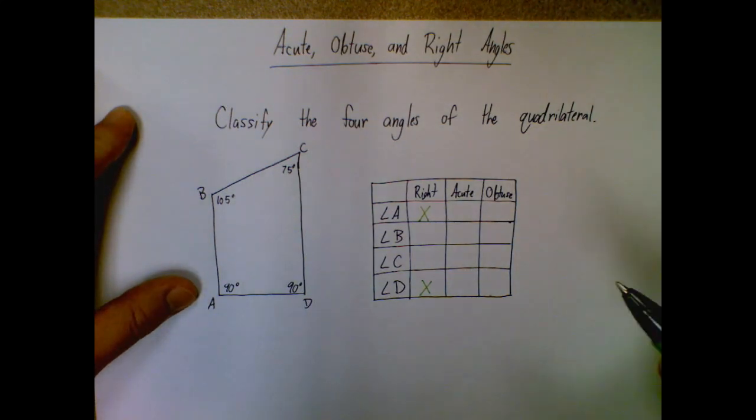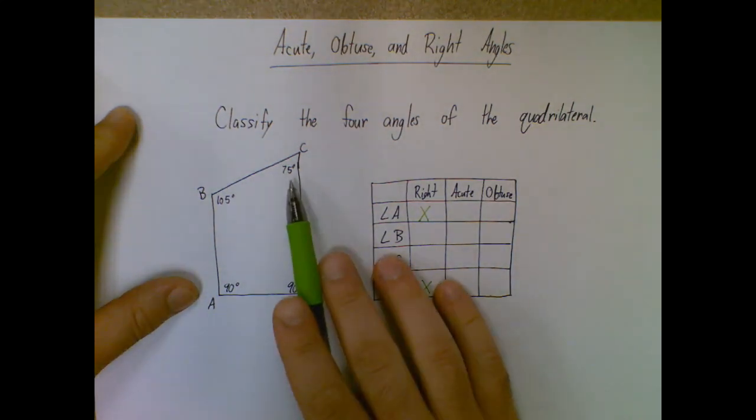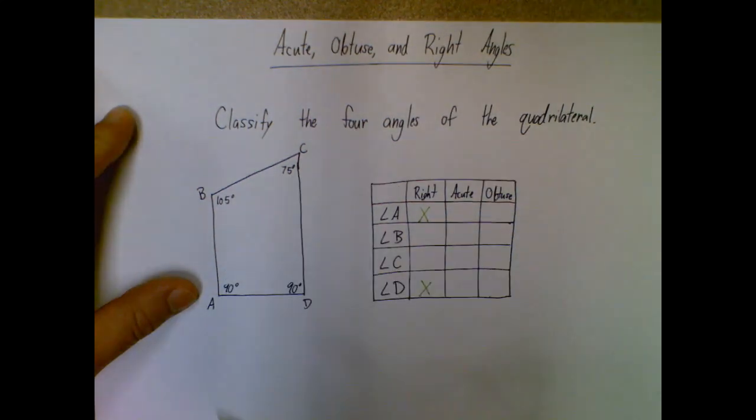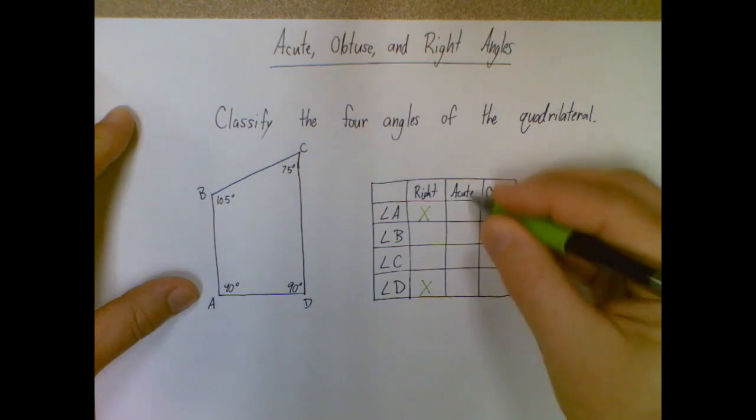So looking at our last two, we have 75 degrees here and 105. So 75 is less than 90. So that is acute, so acute for angle C.